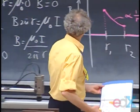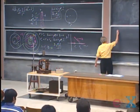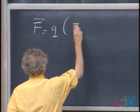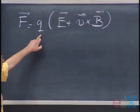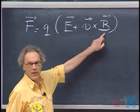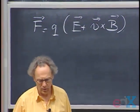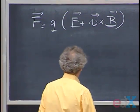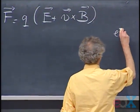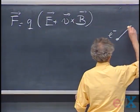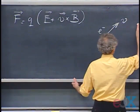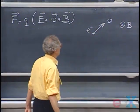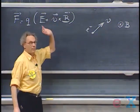Now I want to turn to Lorentz forces. The Lorentz force F = Q(E + V × B). This is the charge moving with velocity V in magnetic field B, and at the location of that charge there also happens to be an electric field E. Let's take a situation: I have an electron — note the charge is negative — with velocity V, and a uniform magnetic field perpendicular to the blackboard going into the blackboard. There is no electric field, so we only deal with Q times V × B.